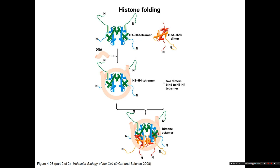The nucleosome comes together in this way: first, two molecules of H3 and two molecules of H4 form a tetramer. DNA can be wrapped around this tetramer in a loose structure. Then we have two H2A/H2B dimers, which bind at the front and the back of this tetramer to form the full nucleosomal structure.